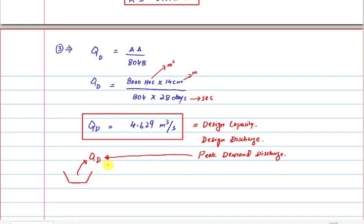That was problem number one. In the next video we will solve another problem, and we will solve three to four problems related to design capacity of canal before jumping into the proper designing section. Till then, goodbye and see you in the next video with our second numerical problem.